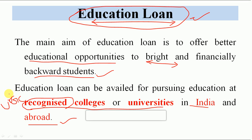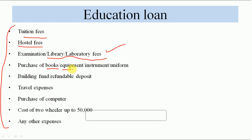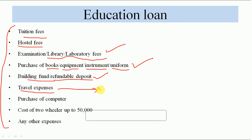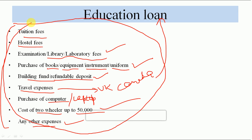Jitni bhi fees hai woh aapko merit-based admission ke baad milti hai. Education loan ke andar kya kya cheezein shamil hoti hain? Tuition fees hoti hai, hostel fees bhi include hoti hai, library aur laboratory ki fees bhi include hoti hai. Even books purchase karne ki, equipment, agar aap science ke student ho to instruments, uniform tak ke paise bhi include milte hain. Building funds, refundable deposit bhi. Agar aap foreign mein — UK ya Canada — jate ho to traveling expenses bhi education loan mein cover hote hain. Computer ya laptop bhi — agar zaroorat hai education related subject mein. Even two-wheeler bhi 50,000 rupees tak.